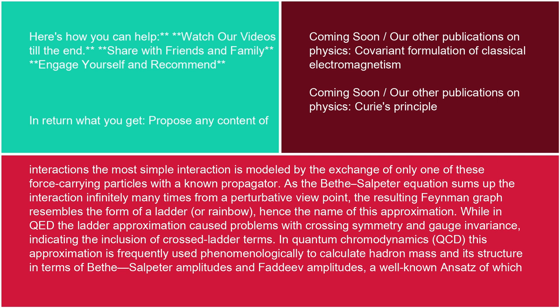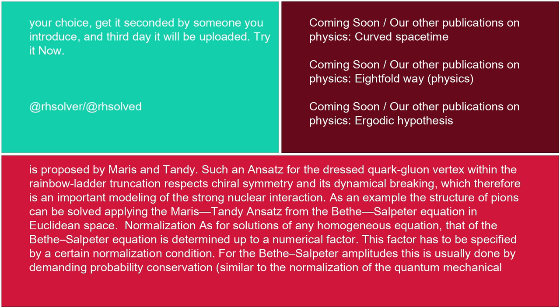While in QED the ladder approximation causes problems with crossing symmetry and gauge invariance, indicating the inclusion of cross-ladder terms, in quantum chromodynamics, QCD, this approximation is frequently used phenomenologically to calculate hadron mass and structure in terms of Bethe-Salpeter amplitudes and Faddeev amplitudes. A well-known ansatz is proposed by Maris and Tandy. Such an ansatz for the dressed quark-gluon vertex within the rainbow-ladder truncation respects chiral symmetry and its dynamical breaking, which therefore is an important modeling of the strong nuclear interaction. As an example, the structure of pions can be solved by applying the Maris-Tandy ansatz from the Bethe-Salpeter equation in Euclidean space.